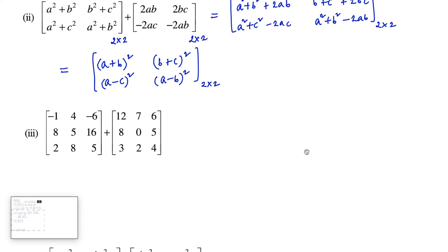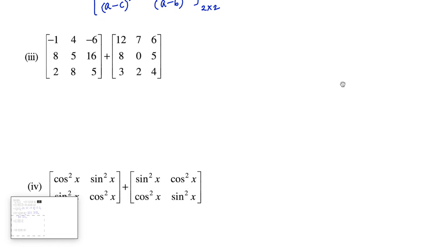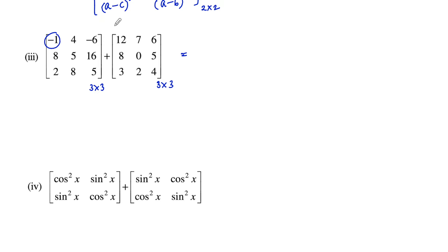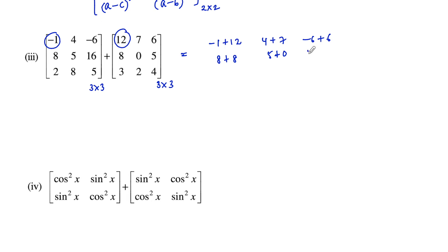Now let's see the third one. The first matrix is of order 3 by 3, the second matrix is also of order 3 by 3, both orders are the same. So we can add the corresponding elements: negative 1 plus 12, 4 plus 7, negative 6 plus 6, 8 plus 8, 5 plus 0, 16 plus 5, 2 plus 3, 8 plus 2, and 5 plus 4.